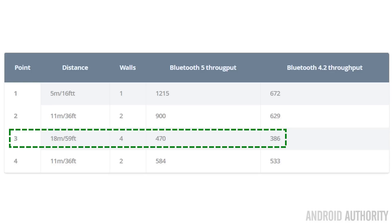At point three — really the other end of my house, diagonally opposite to where my desk and PC are — the throughput dropped significantly. On Bluetooth 5 it was now 470 kilobits per second, and on Bluetooth 4.2 it was 386 kilobits per second. So Bluetooth 5 is still faster, but the difference between the two has been reduced significantly. The further the range between the two devices, the less benefit there is to Bluetooth 5.